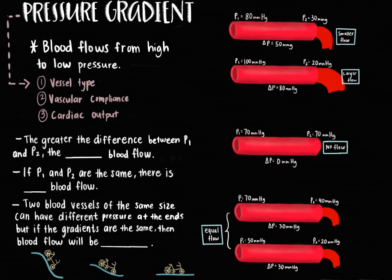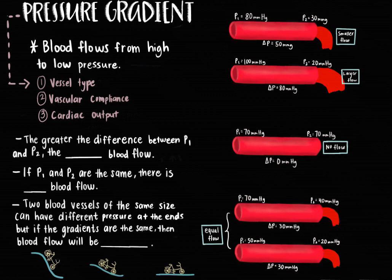When there is a pressure of 80 mmHg at one end (P1) and a pressure gradient of 30 mmHg at the other end (P2), the difference gives us a pressure gradient of 50 mmHg. When we have a pressure of 100 mmHg at one end (P1) and a pressure of 20 mmHg at the other end (P2), the difference results in a pressure gradient of 80 mmHg. Comparing the two gradients, we will see a greater blood flow in the second example with 80 mmHg compared to the first with 50 mmHg, because the greater the difference between P1 and P2, the greater the blood flow.